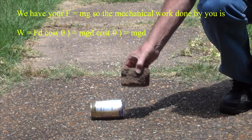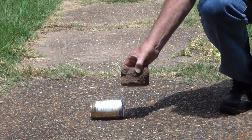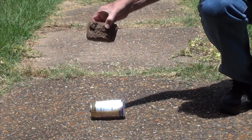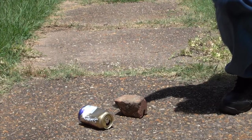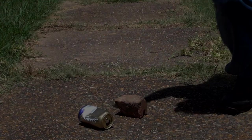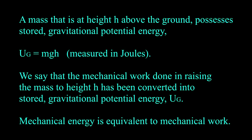In problems involving gravity, we usually write the height using the symbol h rather than d, so we have work equal mgh. The raised rock must possess mechanical energy, because if you let go, it falls on the can and bends the metal. A mass at height h above the ground possesses stored gravitational potential energy, U sub g equals mgh, which is measured in joules. We say that the mechanical work done in raising the mass to height h has been converted into stored gravitational potential energy U sub g.